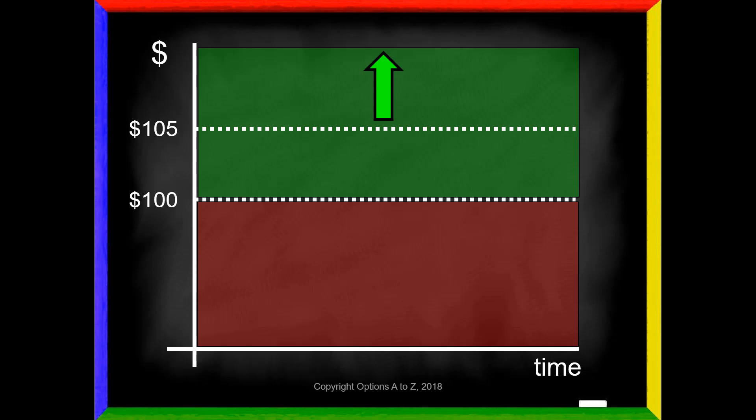And that means there is this additional area of loss for the options trader that does not exist for the stock trader. Right? If the stock is at $102, $103, all the way up to $105, the stock trader made money. Options trader didn't. Provided we are right at expiration.